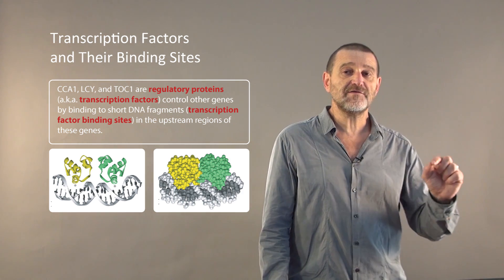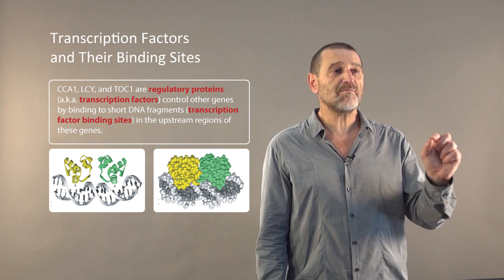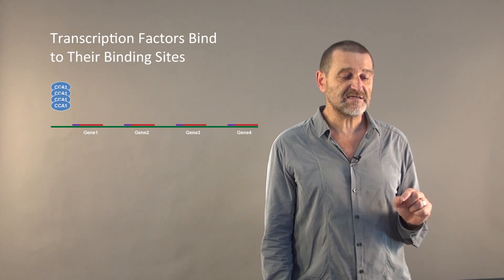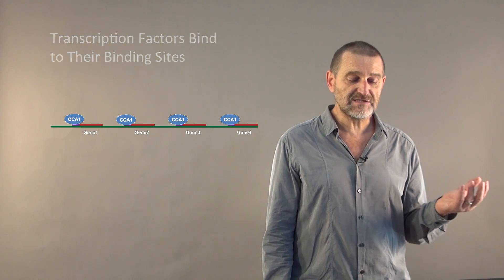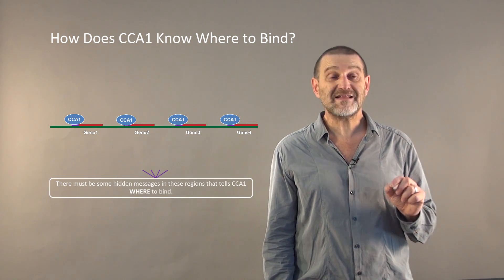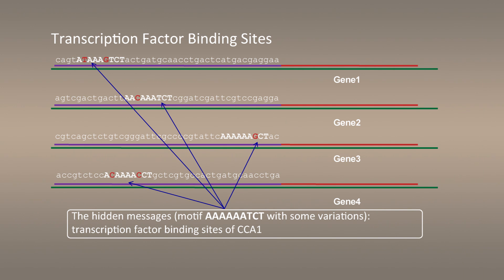For example, if one of these regulatory proteins wants to control particular circadian genes, it probably has a region within a thousand nucleotides from the start of the gene where it binds. Here is CCA1, one of these three regulators. To exert control over these genes, it has to bind in the upstream region of these genes. But how does CCA1 know where to bind? Probably there are some hidden messages that tell CCA1 bind here. Our goal today is to find this particular hidden message where CCA1 binds to.